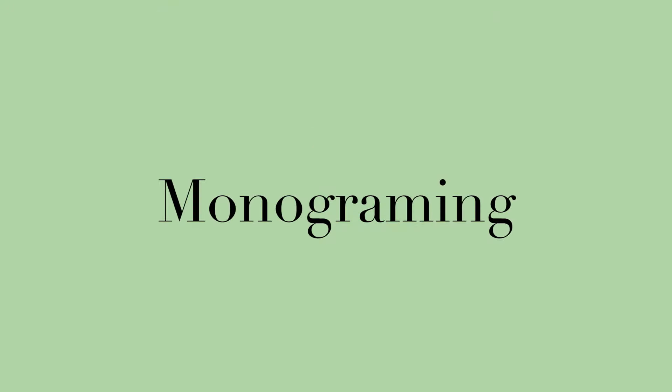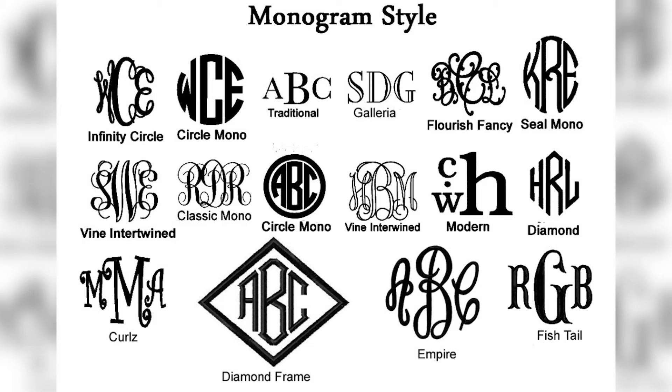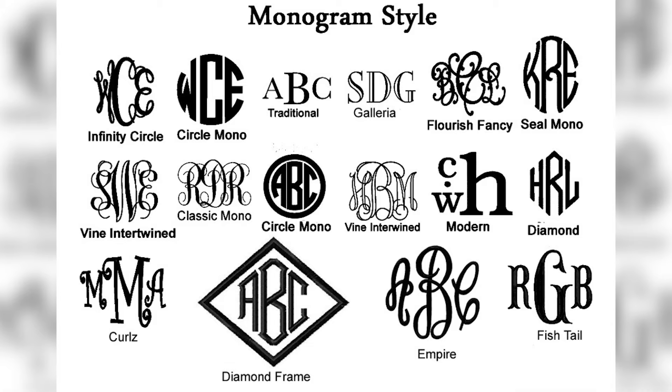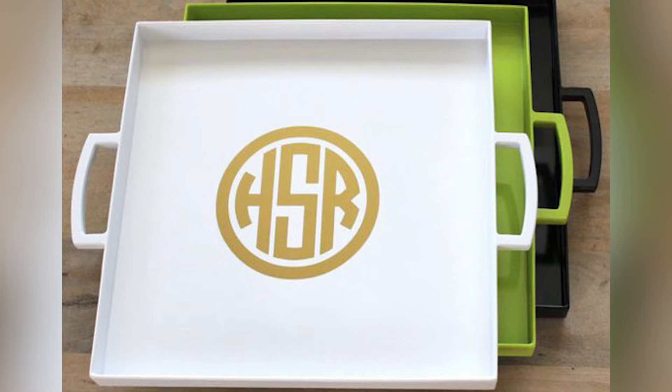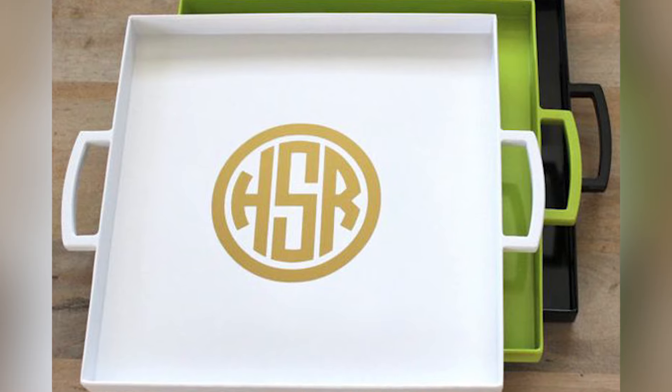Now that you've committed to monogramming and know exactly how you want to lay it out, you still have a few questions: What color do I get? Should I get it embossed or threaded? What's the font, what's the style? The first step after making the decision to monogram is to make sure the font — the style of lettering you choose to express your personality using your initials — complements your overall style aesthetic.